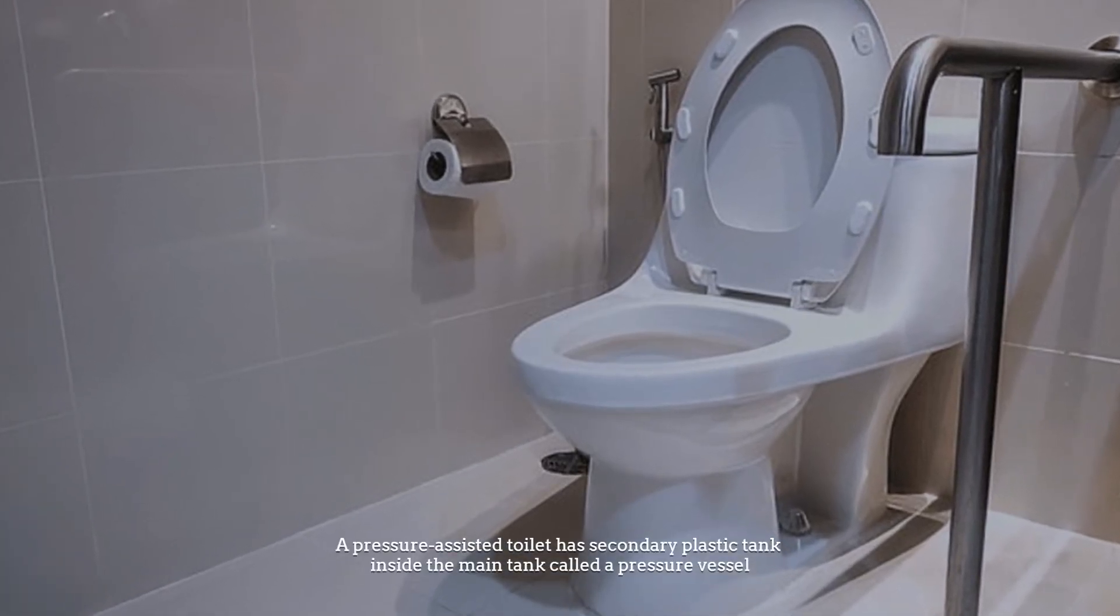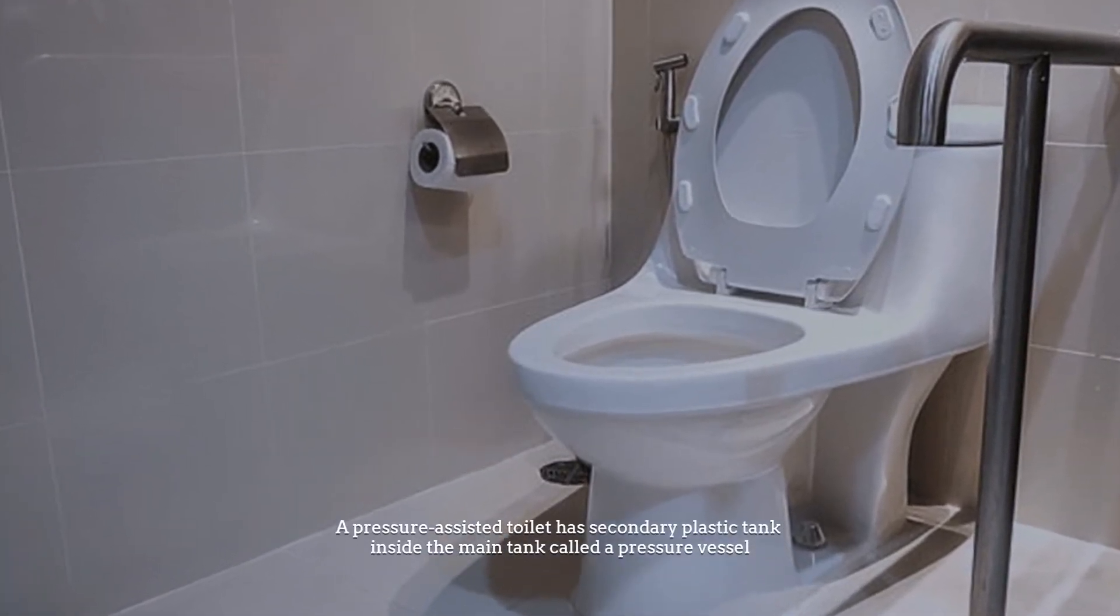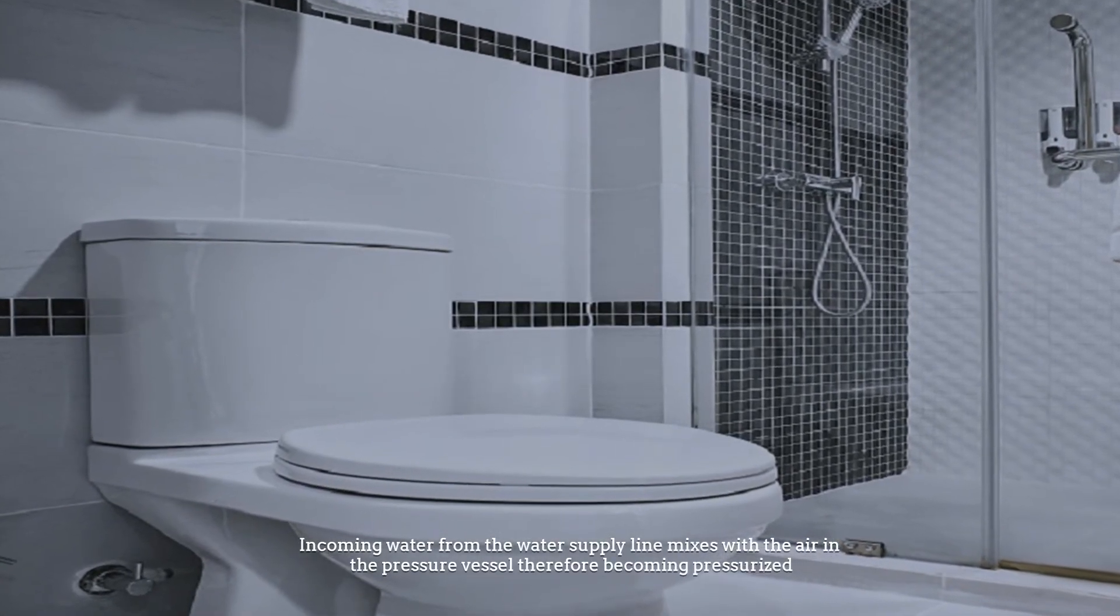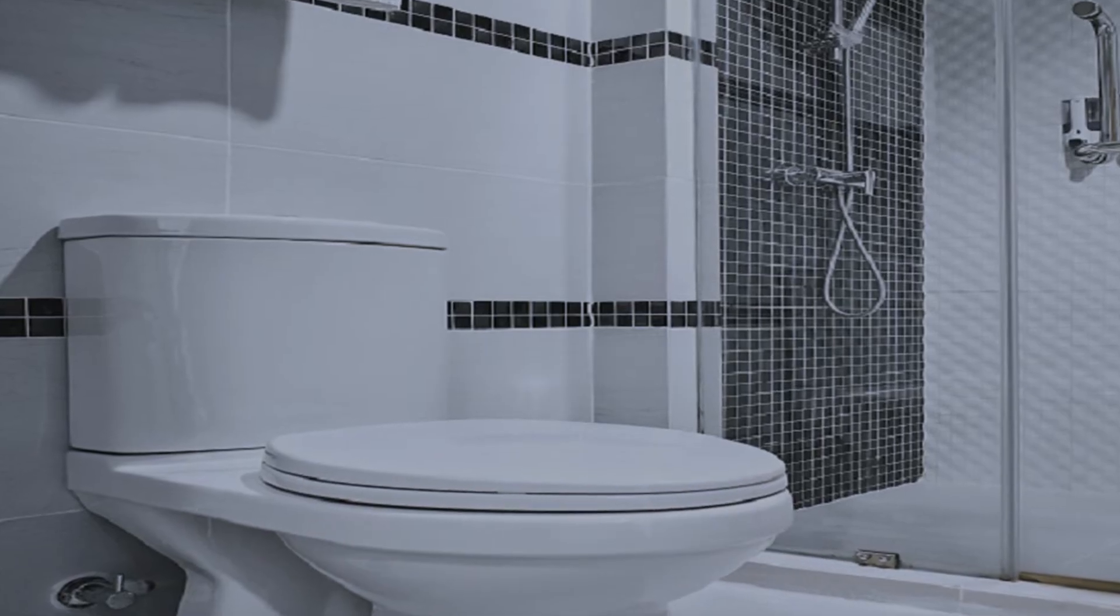A pressure assisted toilet has a secondary plastic tank inside the main tank called a pressure vessel. Incoming water from the water supply line mixes with the air in the pressure vessel, therefore becoming pressurized.